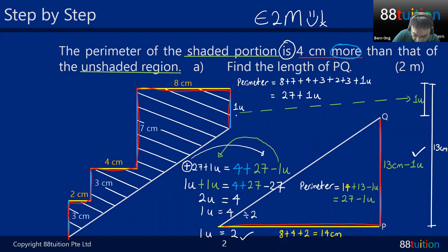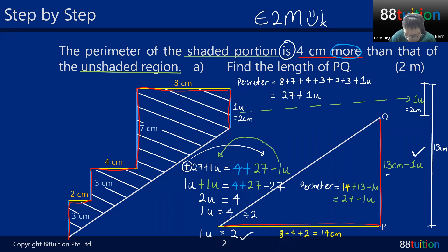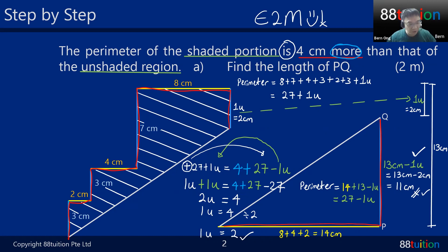That means this portion equals 2 cm. The length of PQ is 13 cm − 1 unit = 13 − 2 = 11 cm. That's your answer for part A. For this question, use the 'here and there' method. You can check out our website for lots of practice, especially useful for Primary 6 and secondary school. That's how we find the length PQ — done.